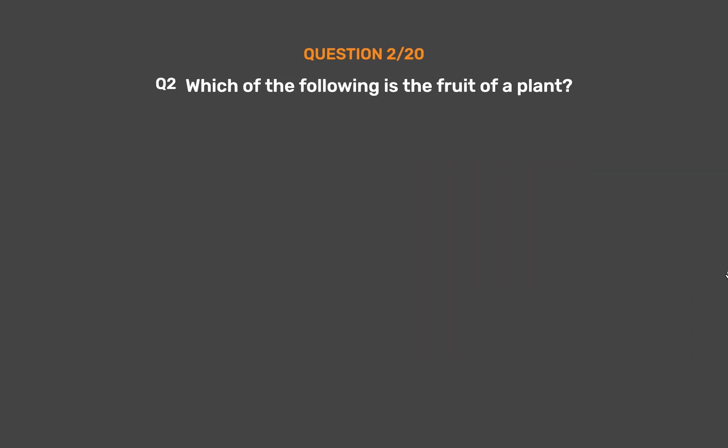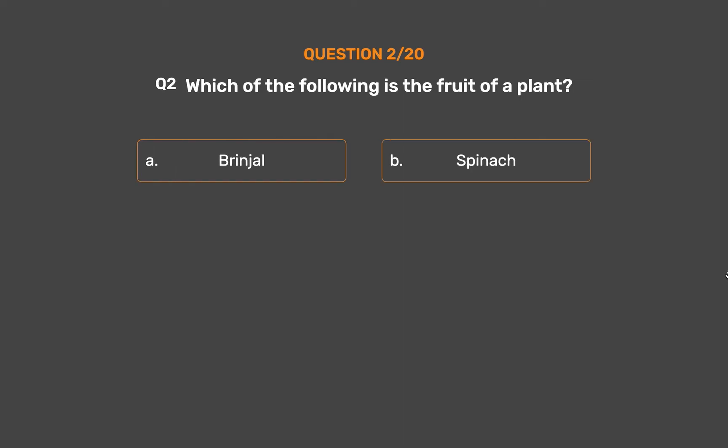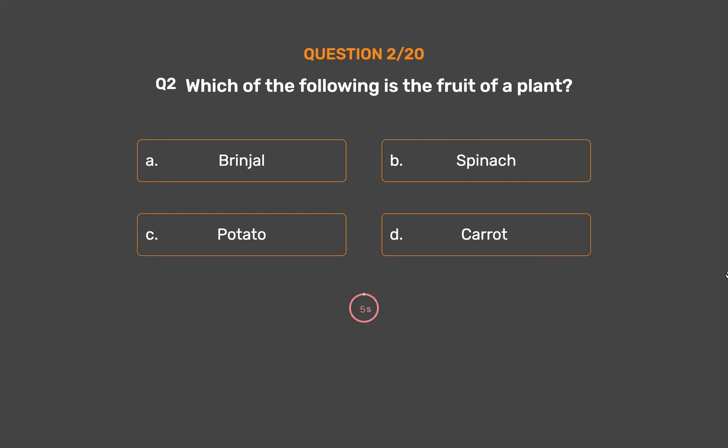Question number 2. Which of the following is the fruit of a plant? Option A, Brinjal. Option B, Spinach. Option C, Potato. Option D, Carrot.